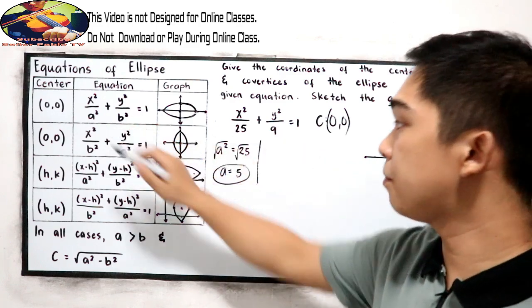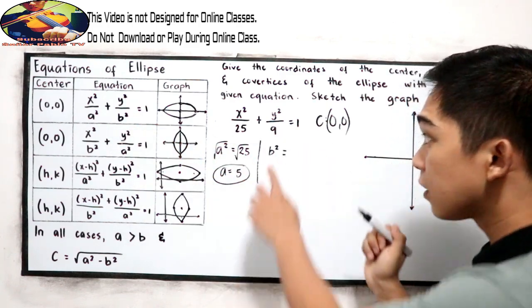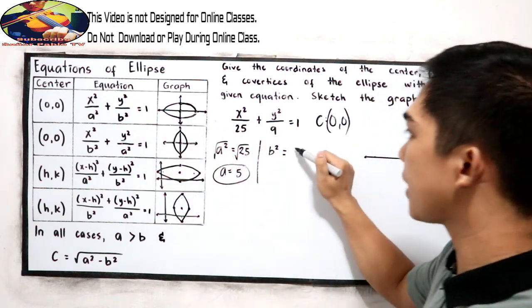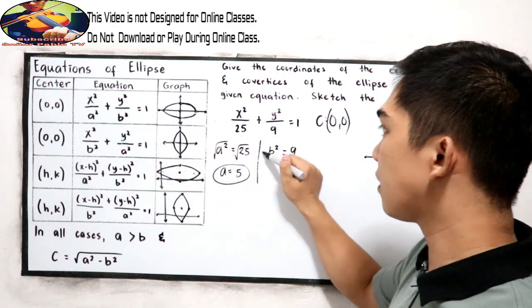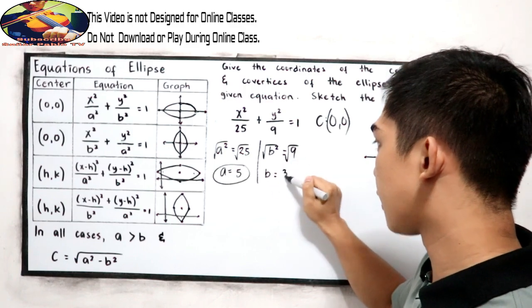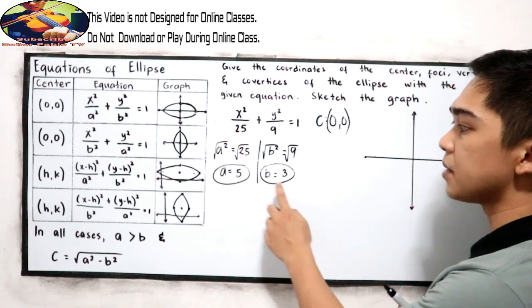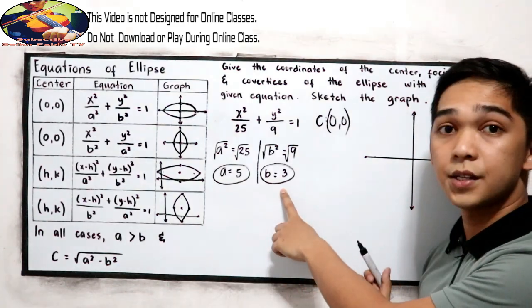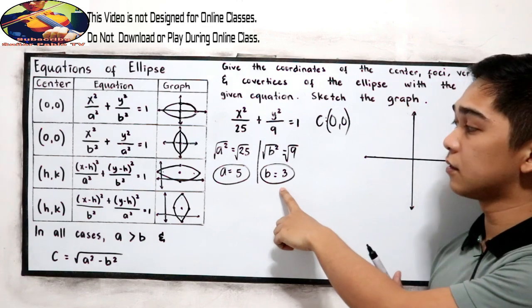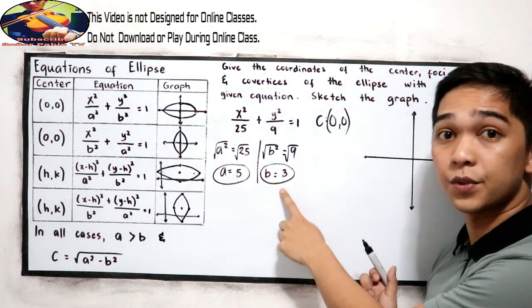Next, find B. Our B squared — the value of B squared in our equation is 9. Extract the square root: B is equal to 3. So the values are A equals 5 and B equals 3. Now let us find C.